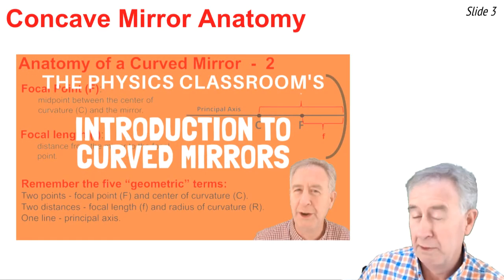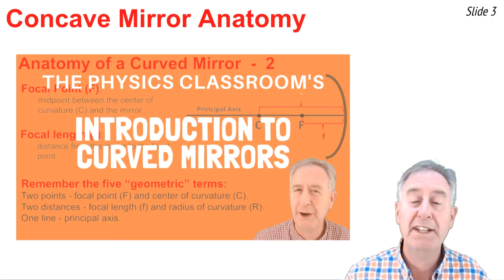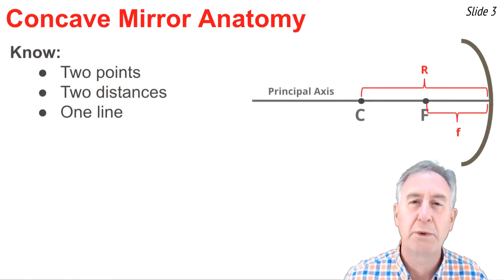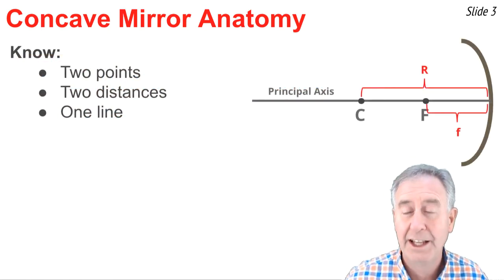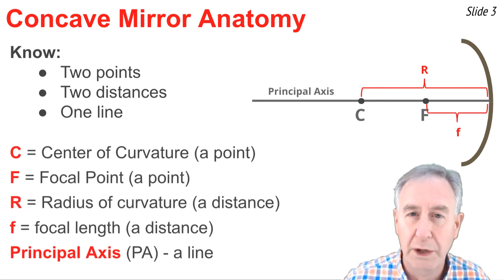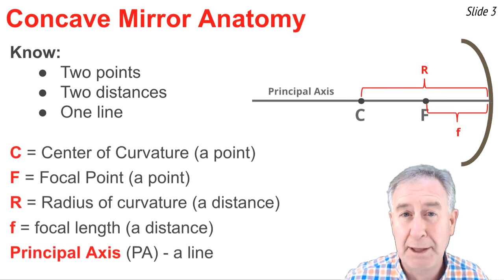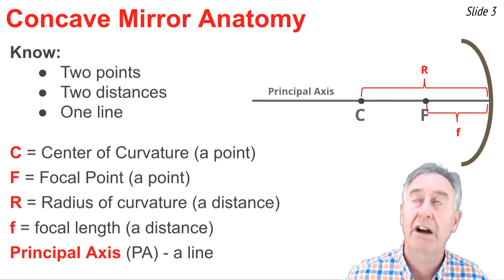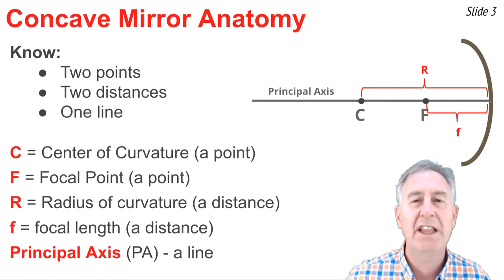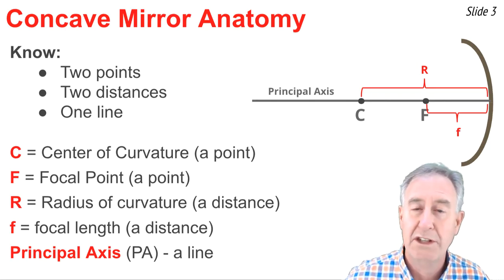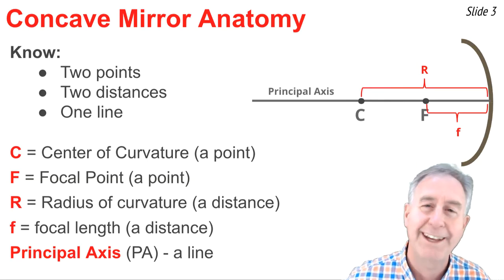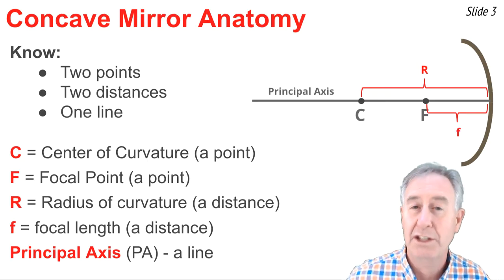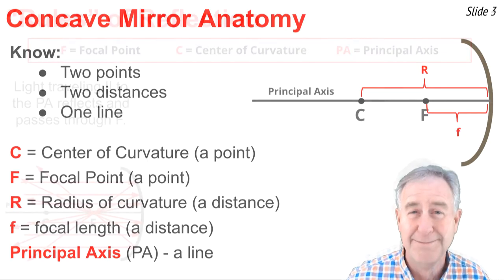In a previous video, I discussed the anatomy of a curved mirror. I've left a link to the video in the description section if you need to review it. In the video, we learned about two points and two distances and a line. The two points are the center of curvature and the focal point, marked C and F in the diagram. The two distances are the radius of curvature and the focal length, marked big R and little f. And the line is known as the principal axis, the imaginary line that goes through the center of curvature beginning at the mirror location.